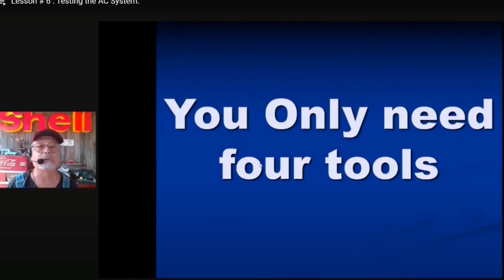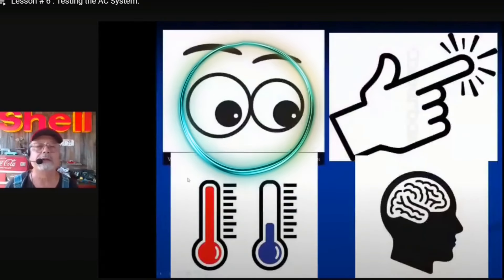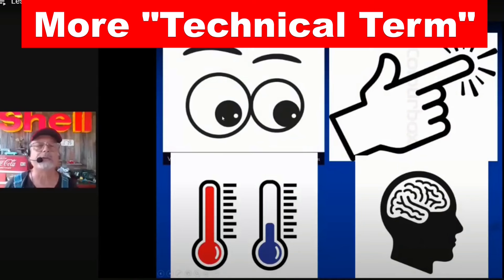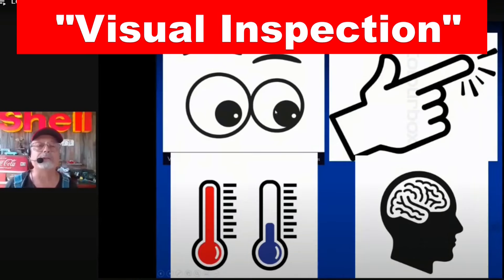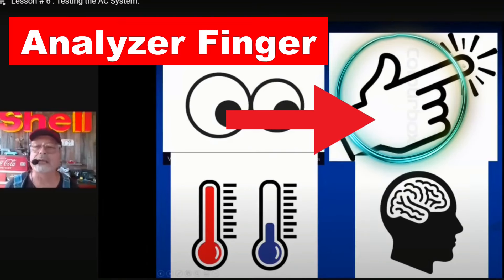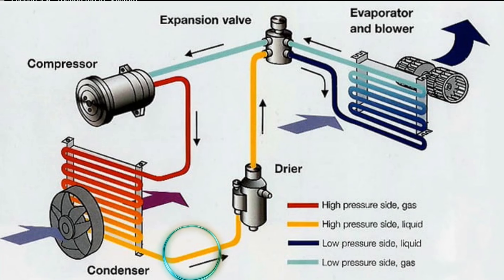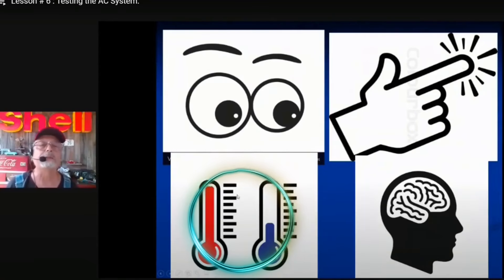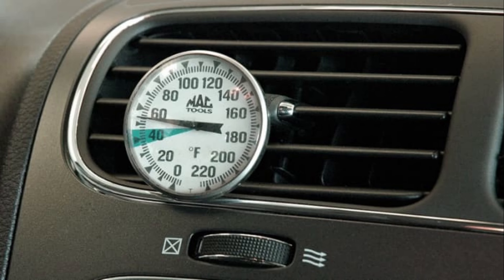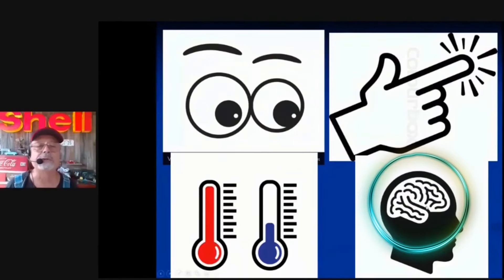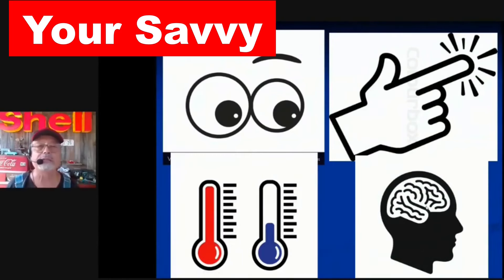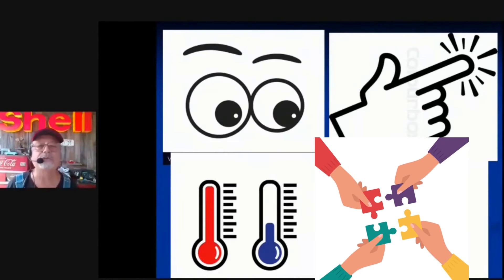You only need four tools and you're holding three of them right now. The four tools are: your eyeballs — you will be performing a knowledgeable visual inspection of several components. Your analyzer finger — you're going to be touching certain parts of the refrigeration system. A thermometer — to accurately measure, not guess at, the temperature. And your savvy — you need to know what to do and how to bring these tools together.